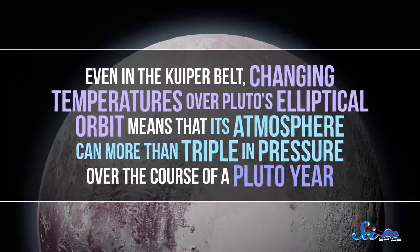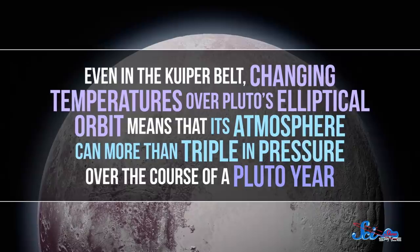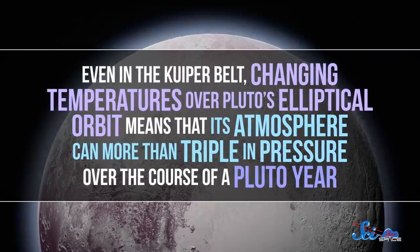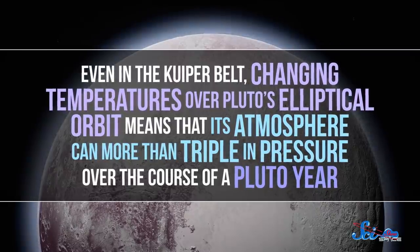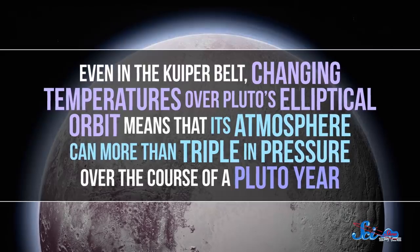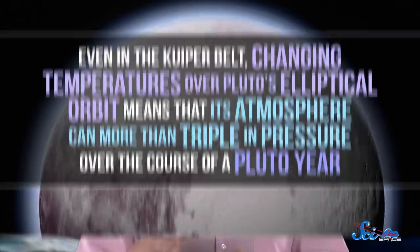Even in the Kuiper Belt, changing temperatures over Pluto's elliptical orbit means that its atmosphere can more than triple in pressure over the course of a Pluto year, which is pretty dang weird. Imagine being on Earth and getting squished by the atmosphere every few months.